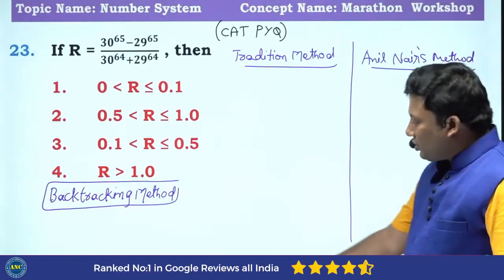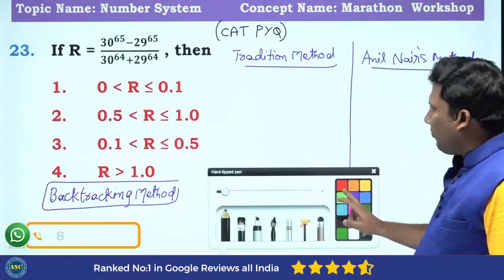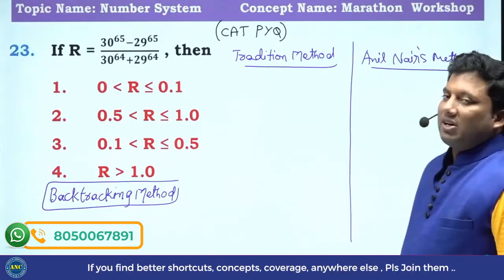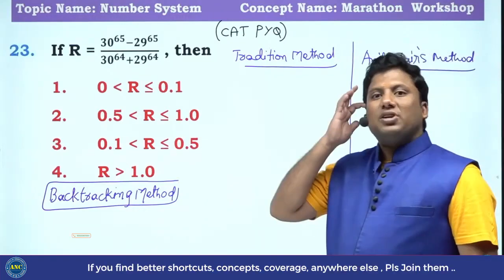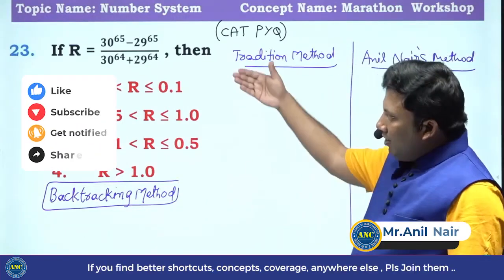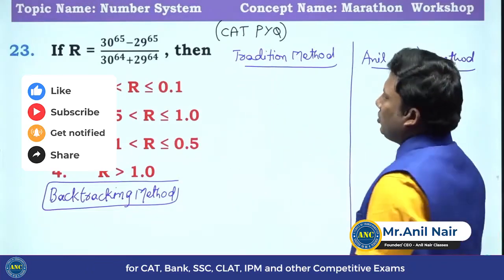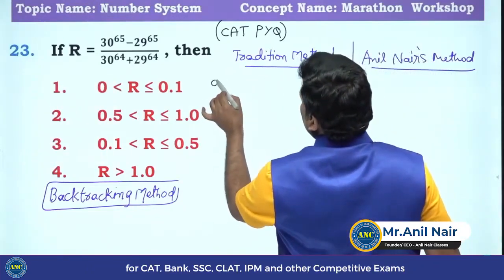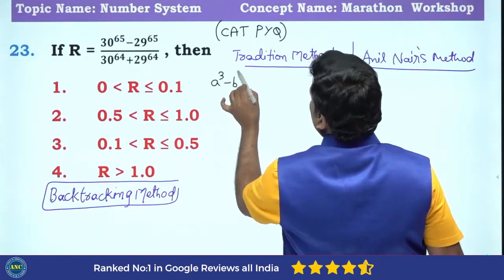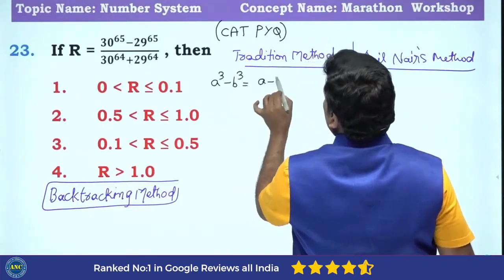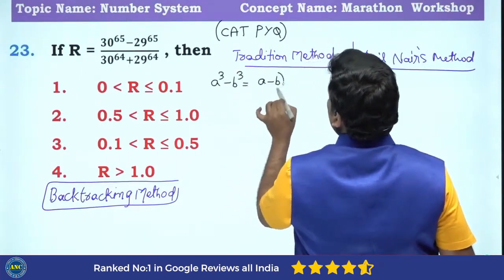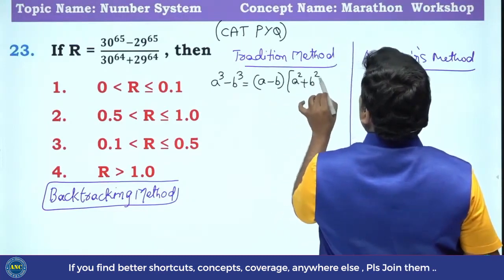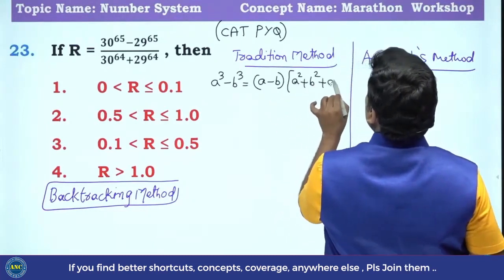Traditional method: 30 power 65 minus 29 power 65, divided by 30 power 64 plus 29 power 64. Which of the following options is true? Now, A cube minus B cube is equal to A minus B, into A square plus B square plus AB.